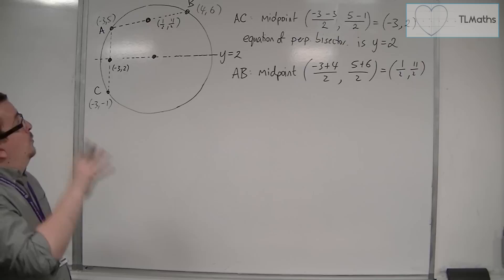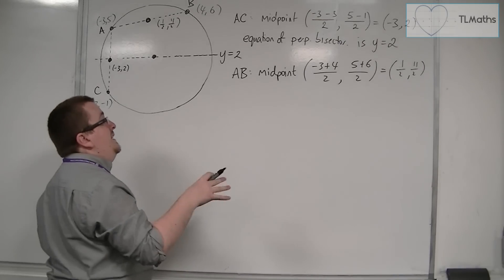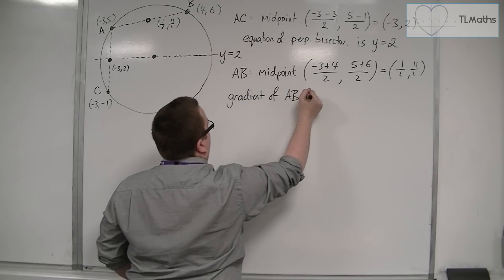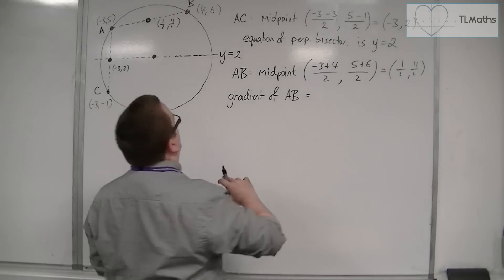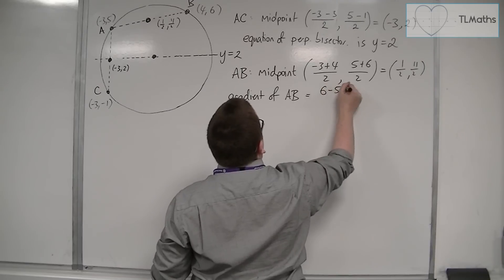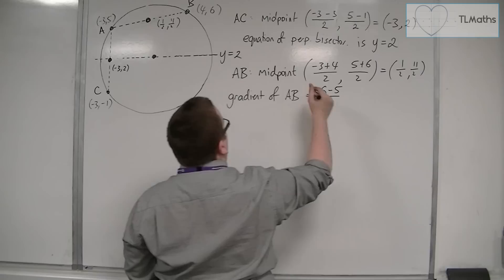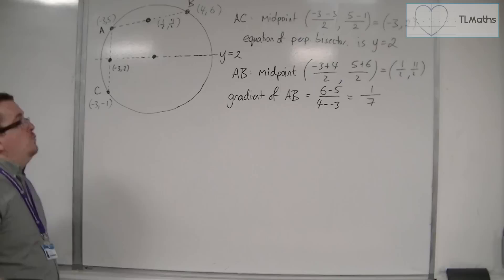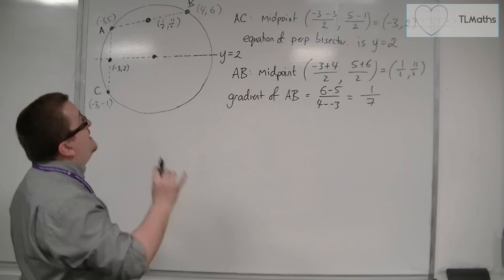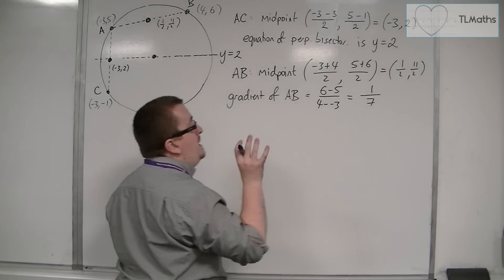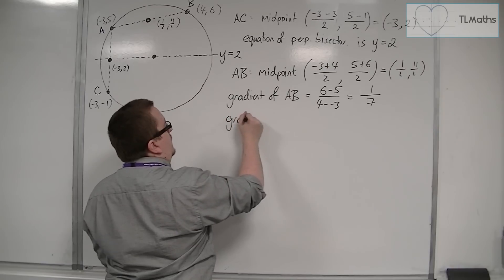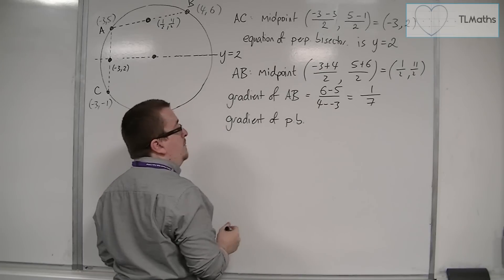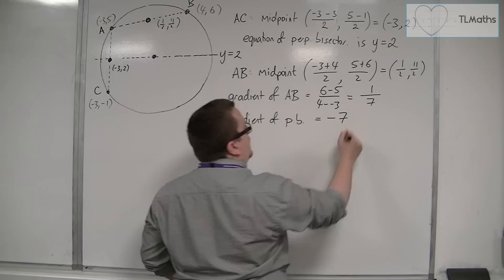In order to find the equation of the perpendicular bisector, we need the gradient of A and B. That's the difference in y-coordinates — six take away five — divided by the difference in x-coordinates — four take away minus three — giving one over seven. So the gradient of A,B is one-seventh, which means the gradient of the perpendicular bisector will be minus seven, as it's the negative reciprocal of one-seventh.